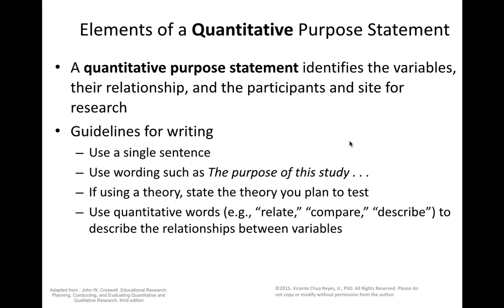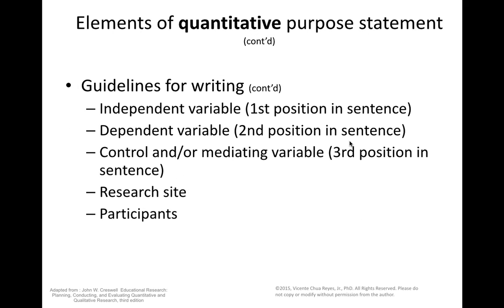A quantitative purpose statement identifies the variables, the relationship, and the participants in the research. Guidelines: use a single sentence, use wording such as 'the purpose of the study.' If using a theory, state the theory you plan to test. Use quantitative words — relate, compare, and describe — when looking at relationships between your variables.